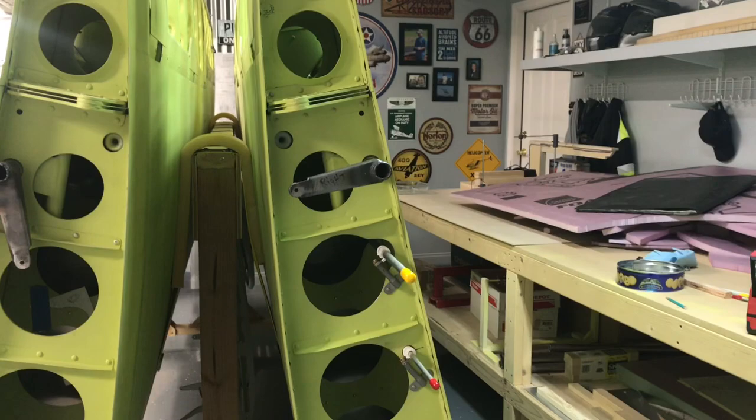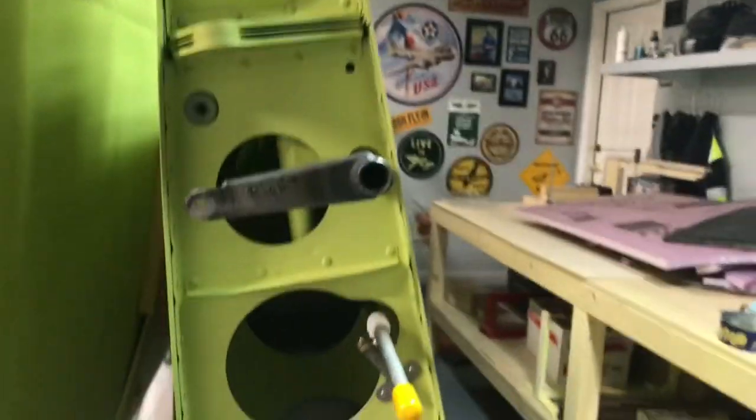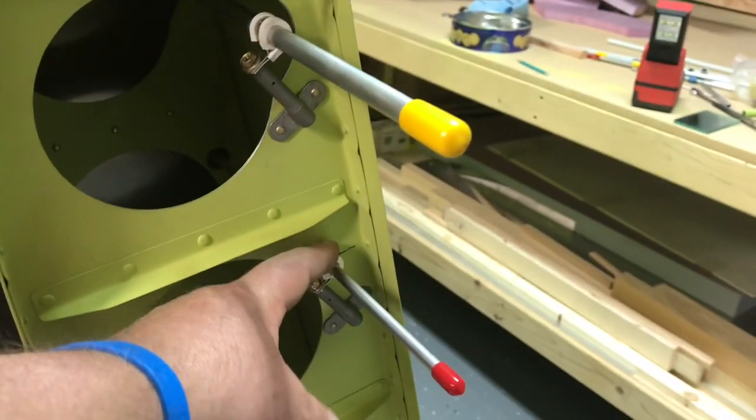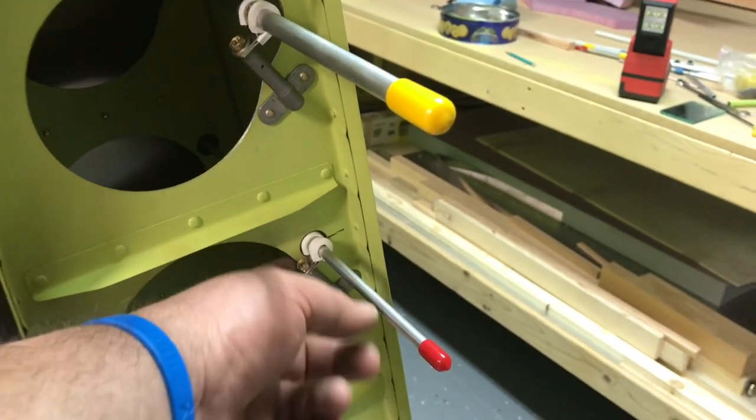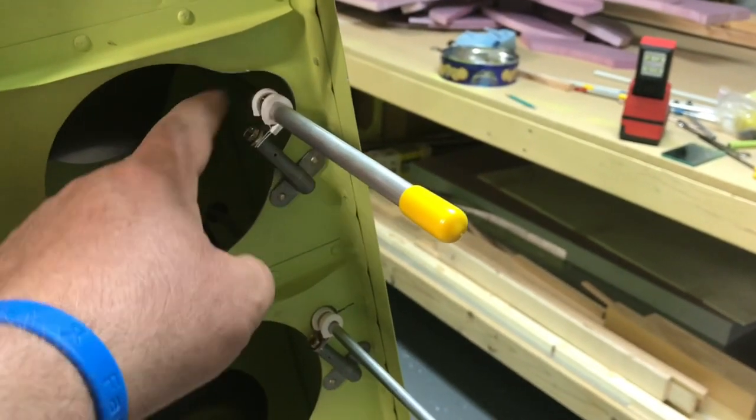One question that was asked real quick was about putting these holes in here. Drilling through the rib, or in this case I just removed material as you can see here.